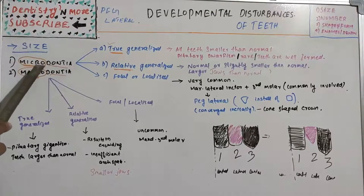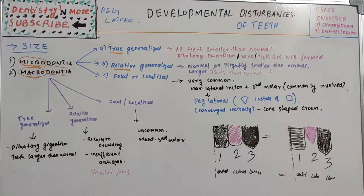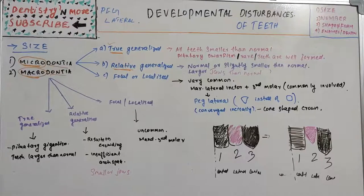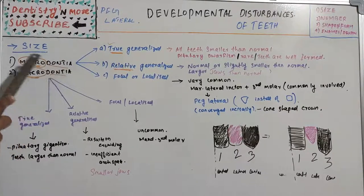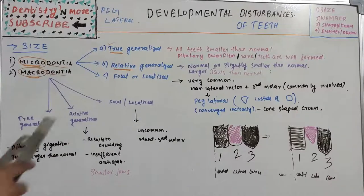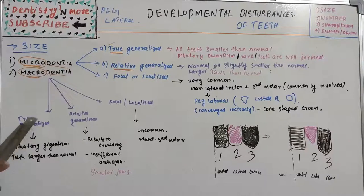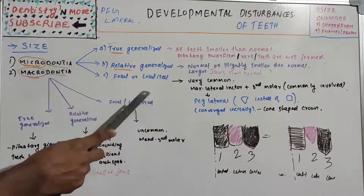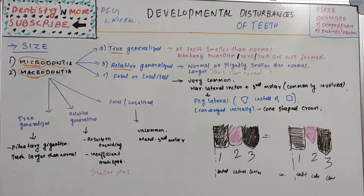Developmental disturbances of teeth related to size are divided into two categories: microdontia and macrodontia. Micro means smaller than normal, macro means larger than normal. So teeth smaller than normal is microdontia, and teeth larger than normal is macrodontia. In both categories we have three subdivisions: true generalized, relative generalized, and focal or localized — applicable to both microdontia and macrodontia.